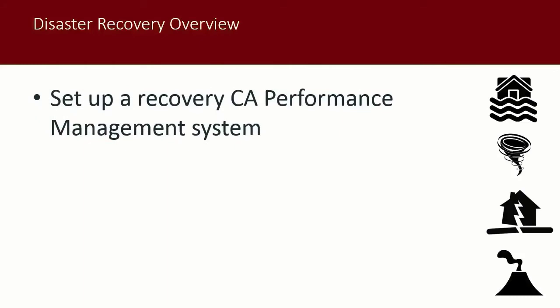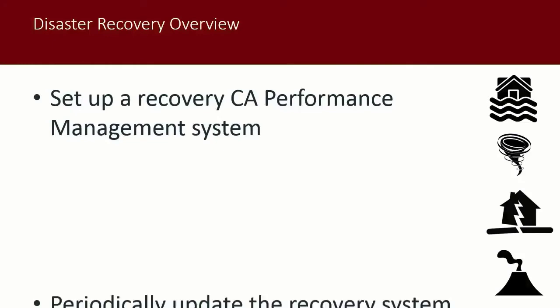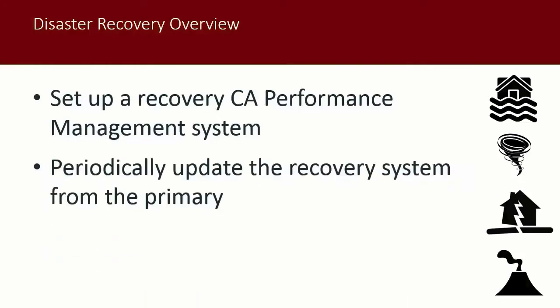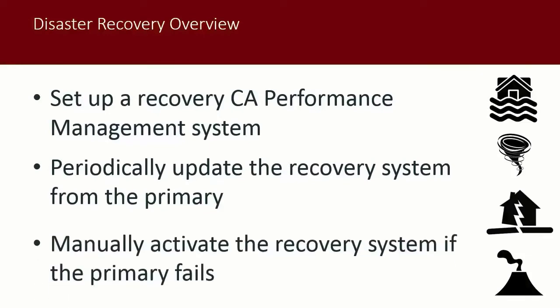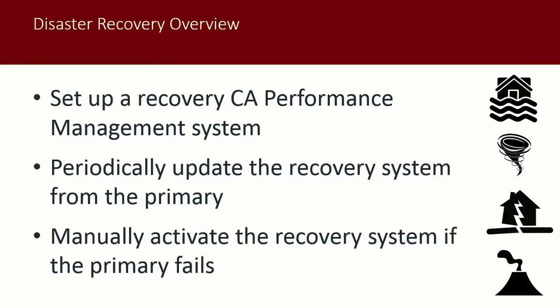First, set up a recovery CA Performance Management system at a site remote from your current primary site. Then, periodically update the recovery system from the primary to keep historical and inventory data in sync. Finally, manually activate the recovery system if the primary fails in the event of a natural disaster or any other incapacitating event.